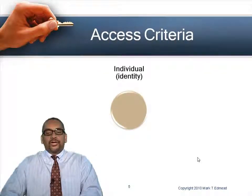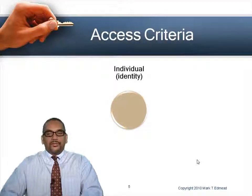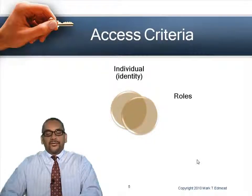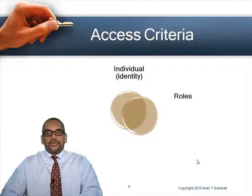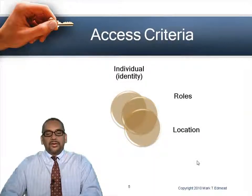Access criteria determines how a person gains access. One way is by individual identity — somebody who's an administrator or identified by name. Maybe it's by role — a member of the administrators group or the engineering group. Depending on the role, they gain certain access. Maybe it's by location — a particular office, building, or geographic location — which can also determine access criteria.